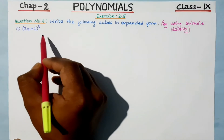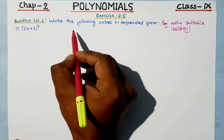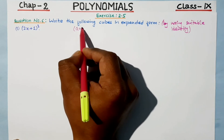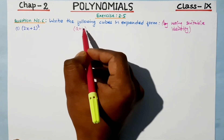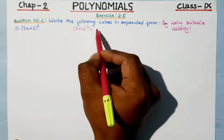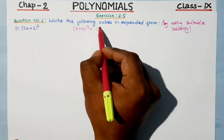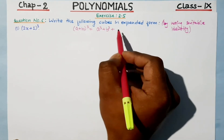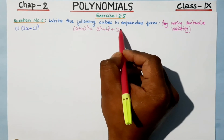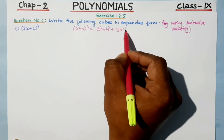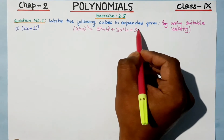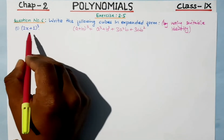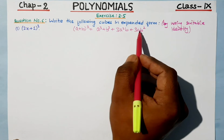Now I am going to use the identity (a + b) whole cube. The identity is: a cube plus b cube plus 3a squared b plus 3ab squared.